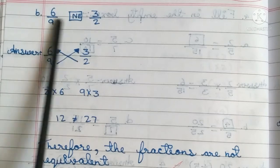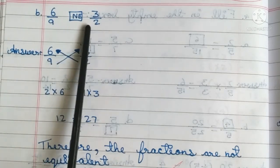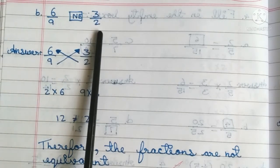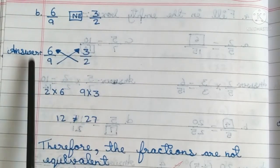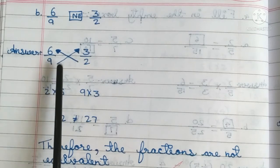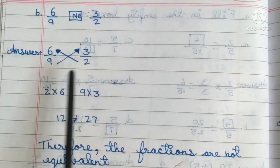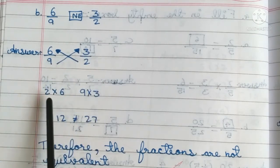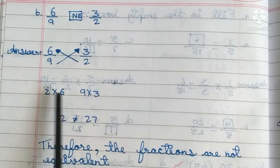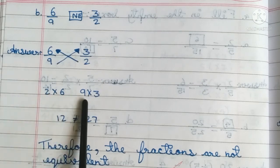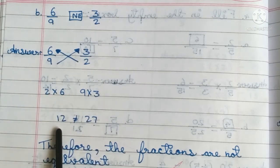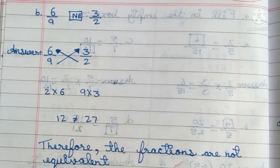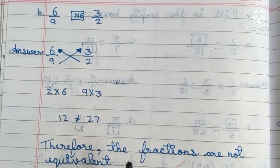Second one: 6 by 9 and 3 by 2. Answer: By cross multiplication, 2 into 6 is not equal to 9 into 3, that is 12 is not equal to 27. Therefore, the fractions are not equivalent.